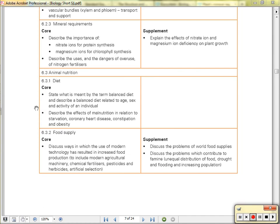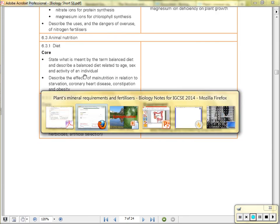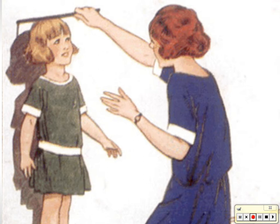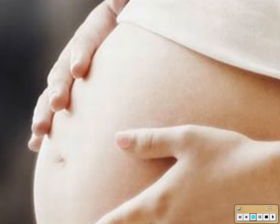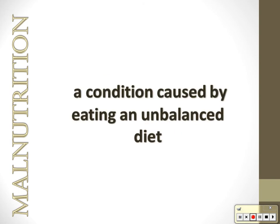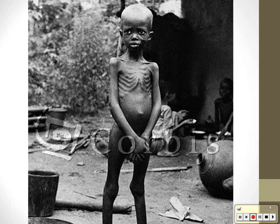Animal nutrition — by animal we mean us. We start with balanced diet: the adequate intake of nutrients necessary to sustain the body and ensure good health and growth. This will be different for different people at different times — you need more proteins when you're growing, more calcium and carbohydrates when pregnant. Malnutrition is a condition caused by an unbalanced diet. Two forms of starvation are marasmus and kwashiorkor.